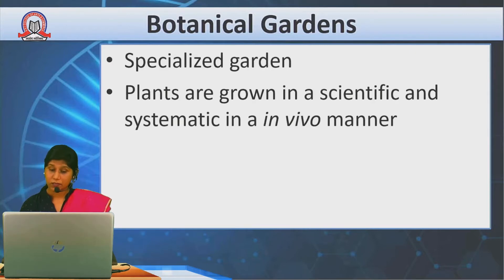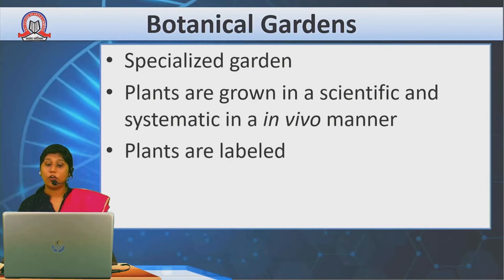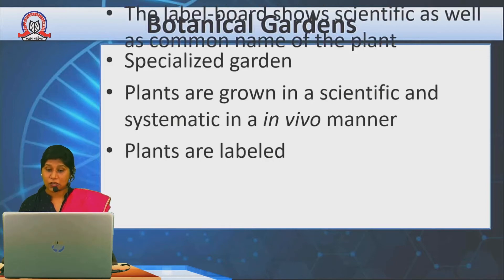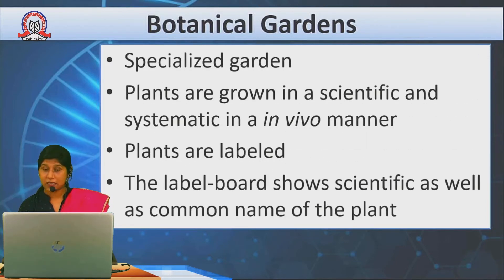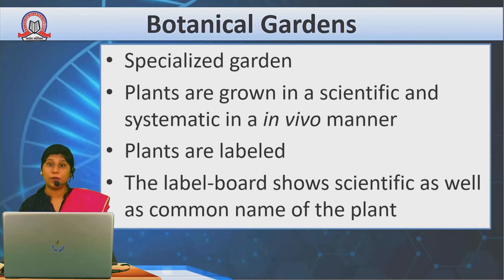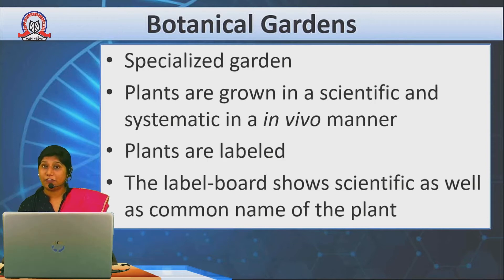The plants grown in botanical gardens are well-labelled. What does labelling mean? Plants have proper labels showing their scientific names, along with common names and their family. So which family a plant belongs to, its scientific name, and its common name — all of this is properly labelled on the plants in botanical gardens.